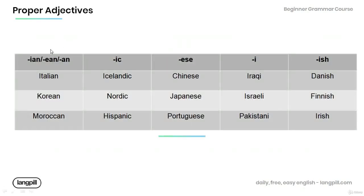Let's look at the table of proper adjectives derived from proper nouns. Those ending in '-ian,' '-ean,' or '-an' include: Italian, derived from Italy; Korean, derived from Korea; and Moroccan, derived from Morocco.